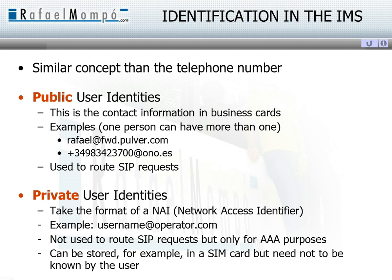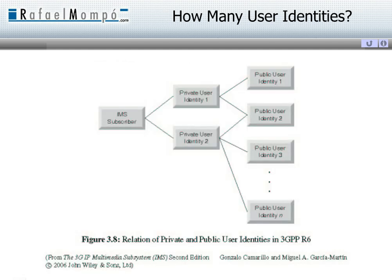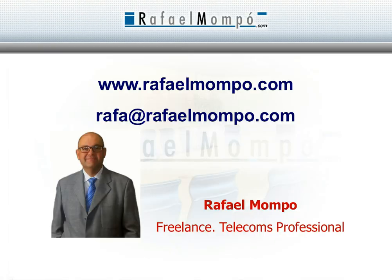Regarding user identification, the telephone number is not necessarily the best solution. An identification format similar to the email address is more efficient as public identification. Moreover, the IMS standard also takes into consideration that the same user can have several public user identities.